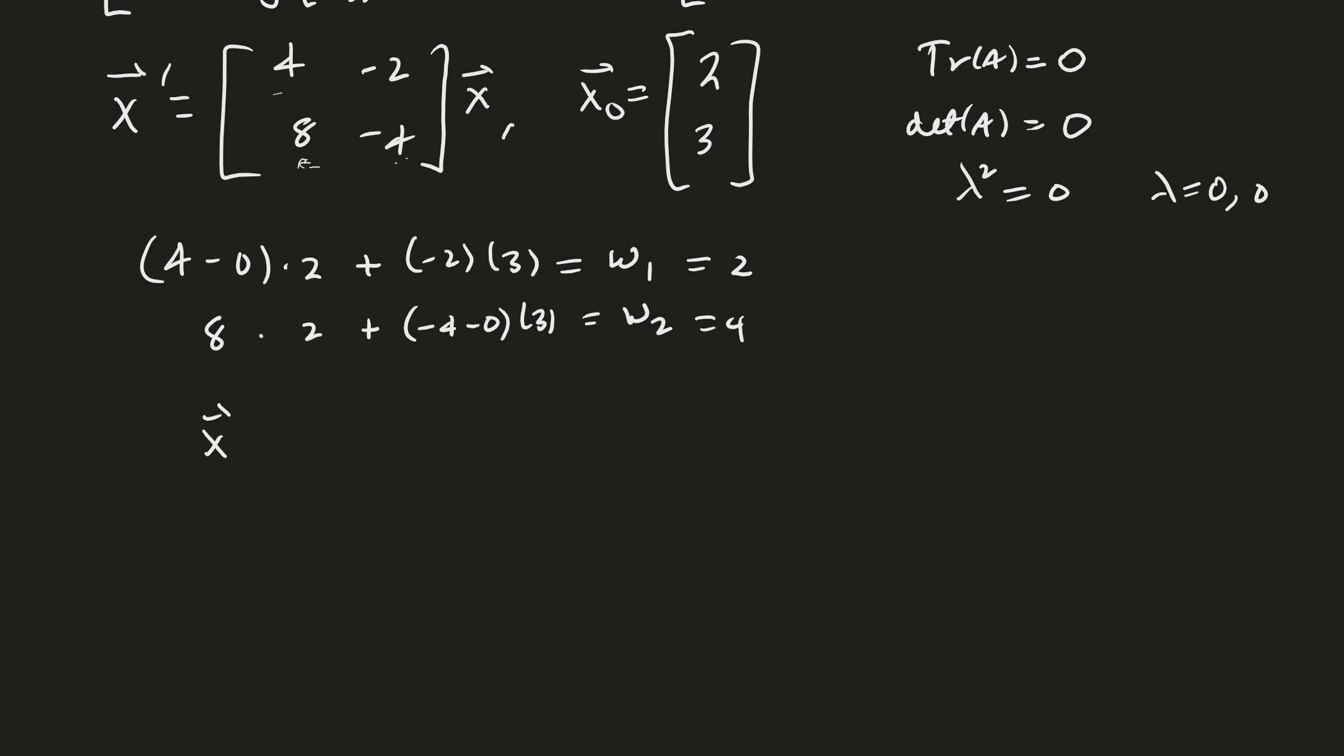And now we have our solution. X of t is equal to e to the 0t times 2, 3 plus t times 2, 4. Very good.